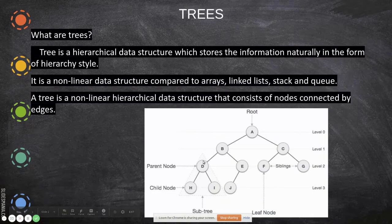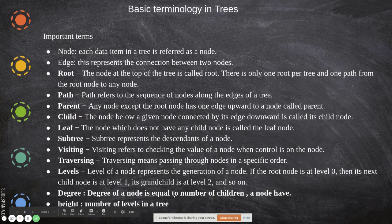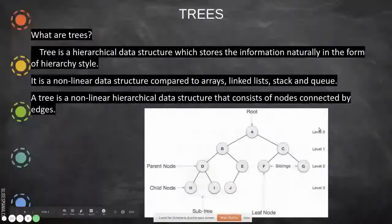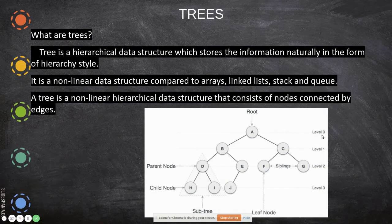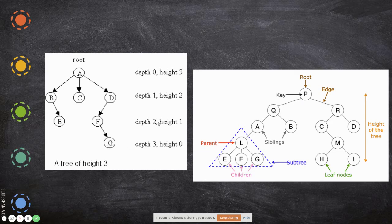Degree of a node equals the number of children a node has. For example, this node has degree two because it has two children. Another node has degree one because it has only one child. Direct children only are counted, not grandchildren. Height is the number of levels — this tree has four levels so the height is three. Depth is the reverse of height — you start from zero and count downward.